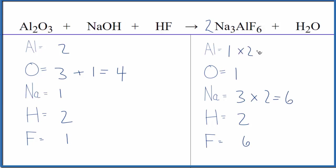The one times the two, that'll balance the aluminums. And then six times two, that'll give us 12 fluorine atoms.